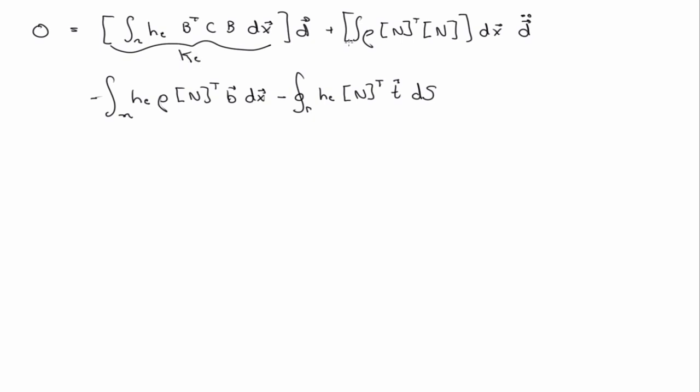So then if we plug it all in, then we have the integral over the domain HE B transpose C B DX times the unknown displacement D plus Rho N transpose N DX D double dot minus HE Rho NT B DX minus HE NT T DS. In the definitions we've used before, this is the stiffness matrix, this is the mass matrix, this is F, this is Q. So then we just have KE D plus ME D double dot minus F minus Q equals zero. And in quasi-statics, which we'll mostly be worried about in this class, you ignore the inertial term, and everything just collapses down to KE D equal to F.